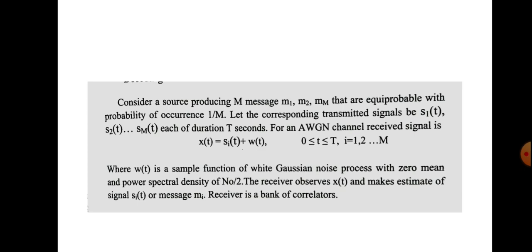We assume that there is a source producing message signals M1, M2, up to Mm. The probability of each of these message signals is equal, so the probability of occurrence will be 1 by M. Corresponding to these message signals, the transmitter transmits the signals S1(t), S2(t), up to Sm(t), each having a duration of T seconds.